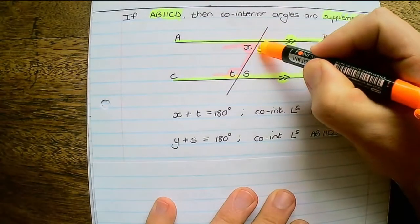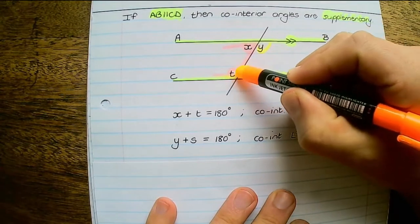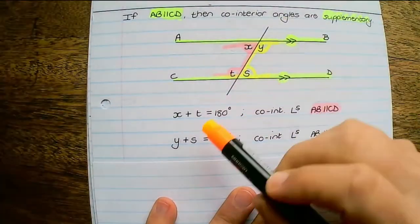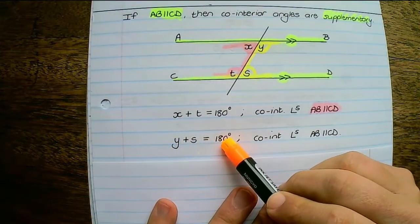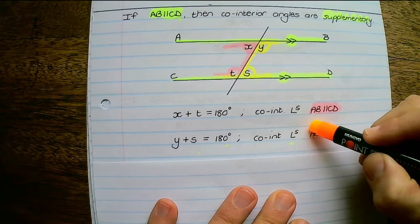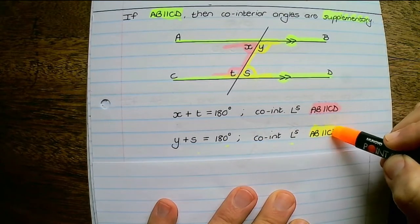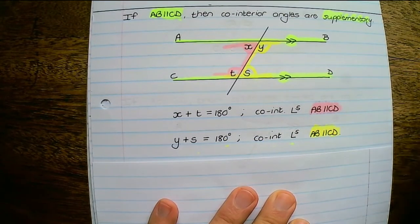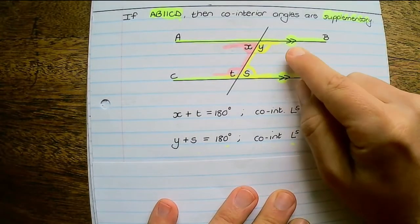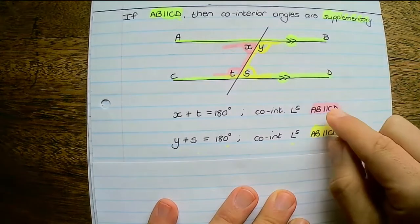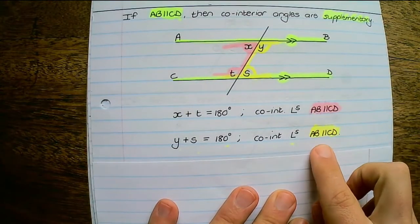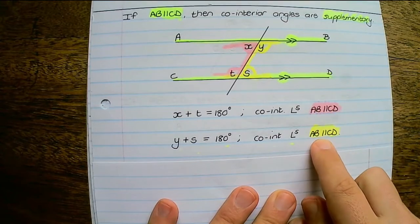Next, angles Y and S: Y plus S equals 180 degrees — co-interior angles, and line AB is parallel to CD. In a diagram, arrows refer to parallel lines, and when writing parallel lines we use two L's next to each other — that notation refers to parallel lines.